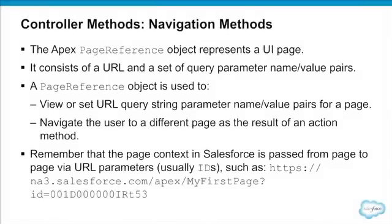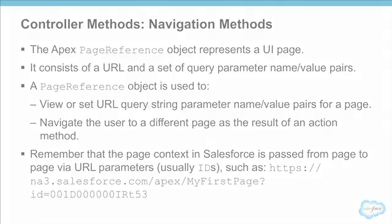The way that action methods control navigation is through page references. A page reference is a class whose purpose is to represent a location that we would like to send our users. There are a number of different ways to create page references.